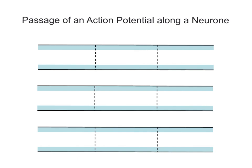Hello everyone. In this video I'm going to be talking about the passage of an action potential along a neuron or nerve cell. Now in a previous video I've spoken about how we generate that action potential from what's called resting potential within the axon. This video is about how the action potential gets propagated, or how it moves along that particular axon.